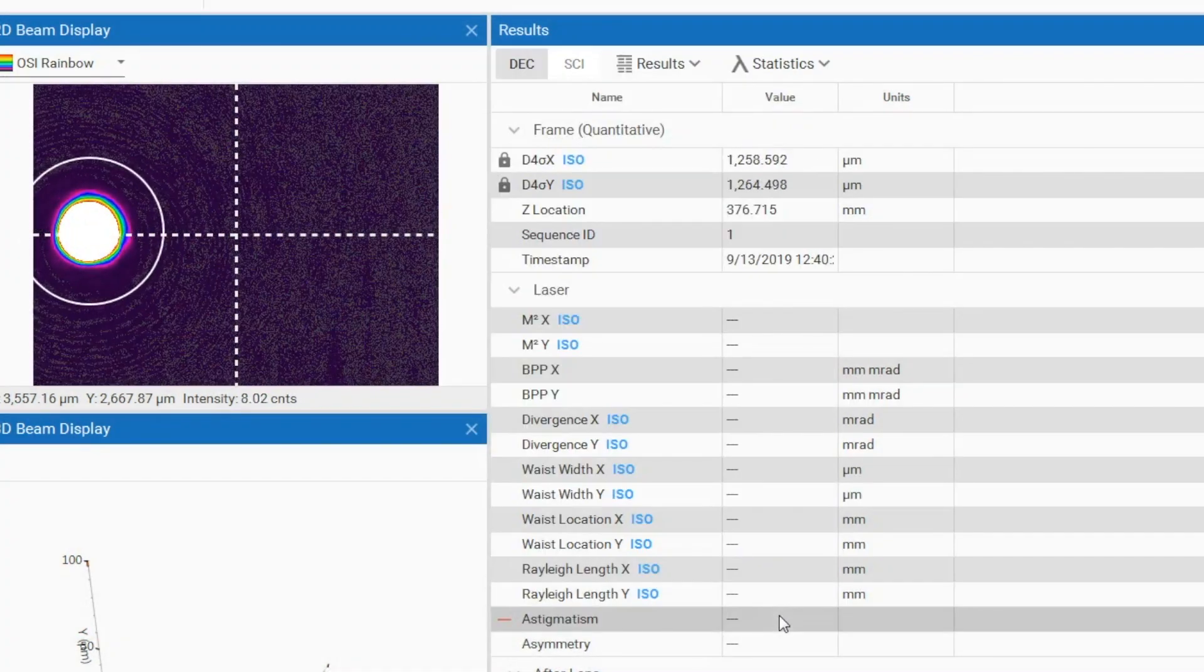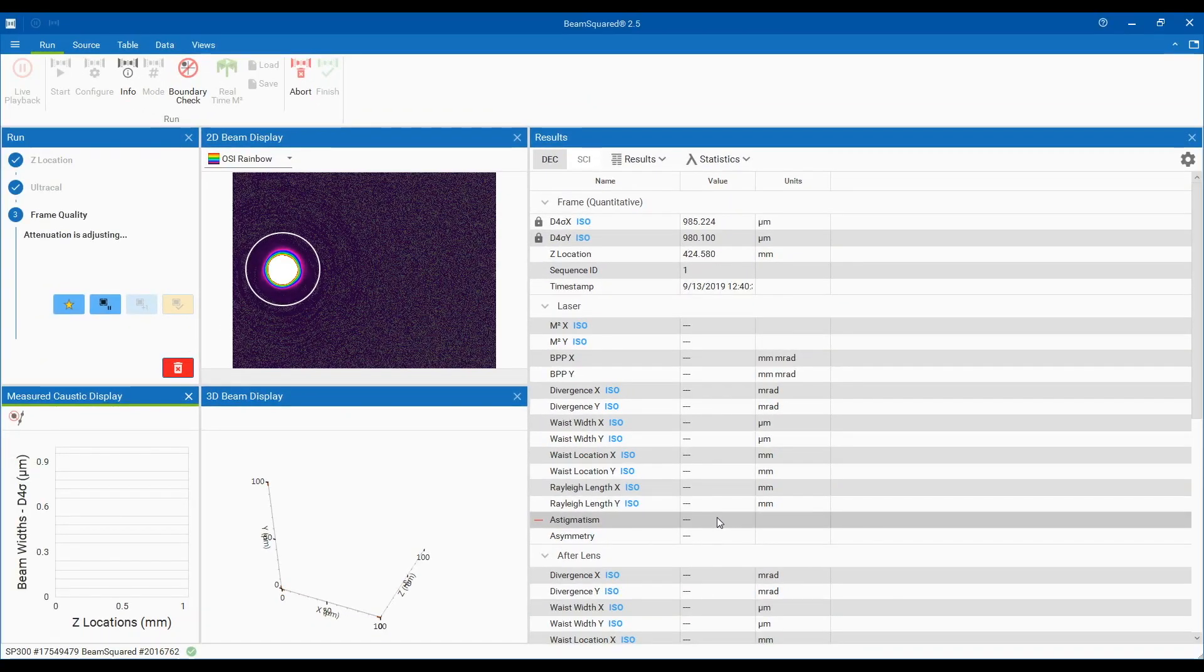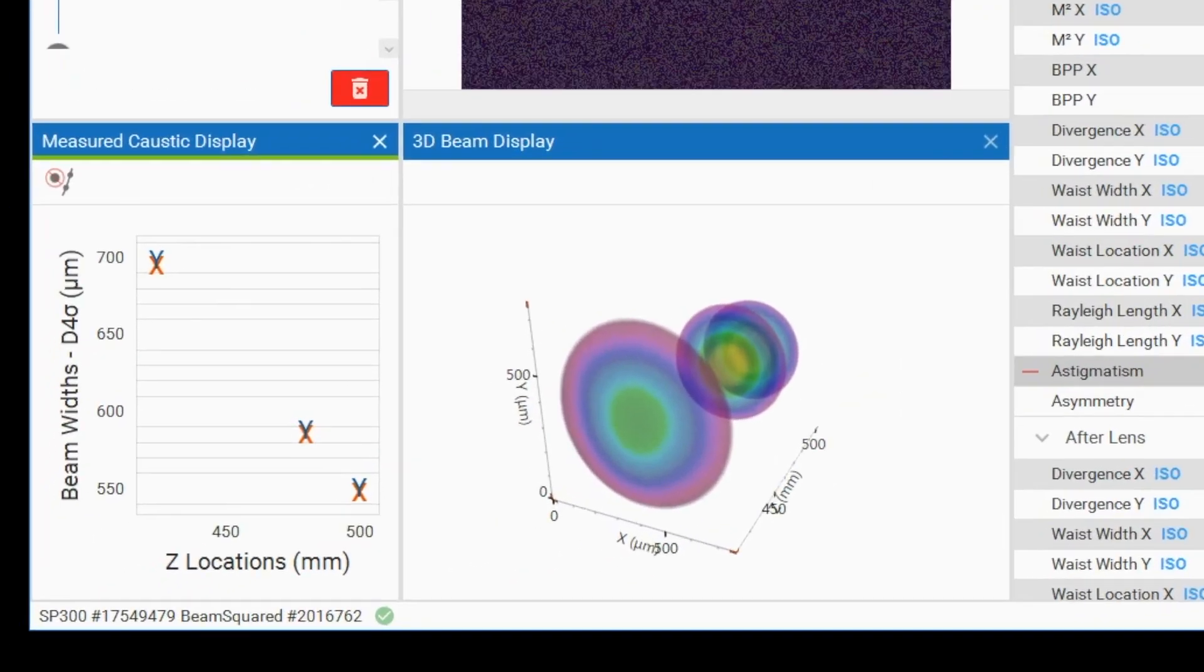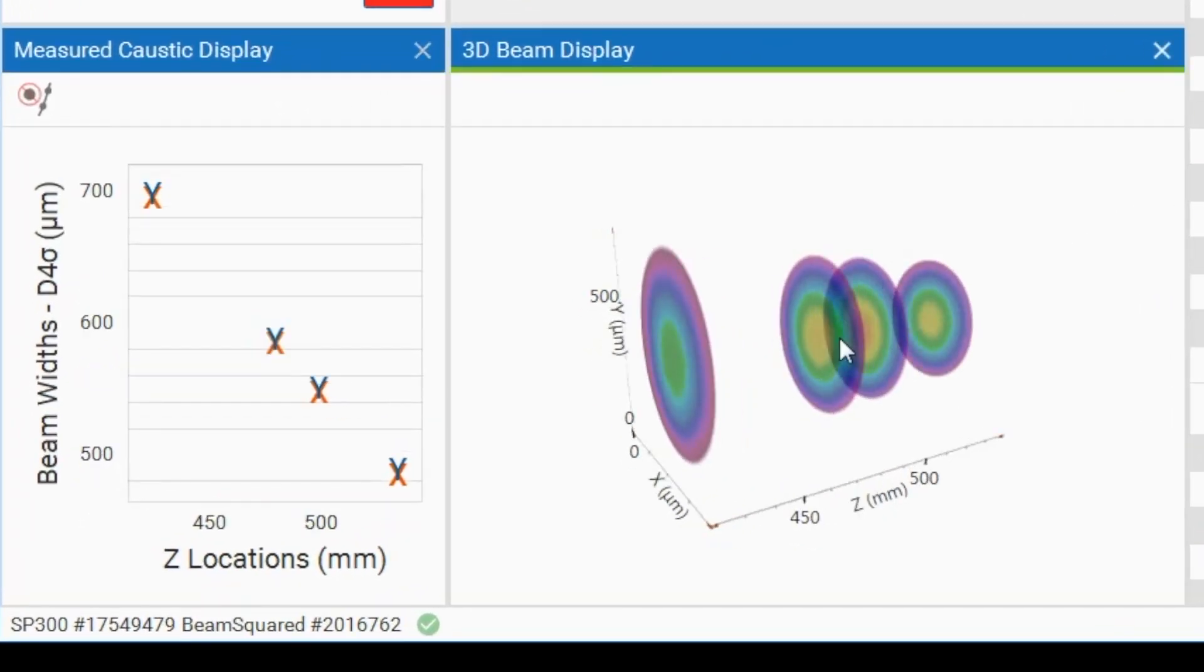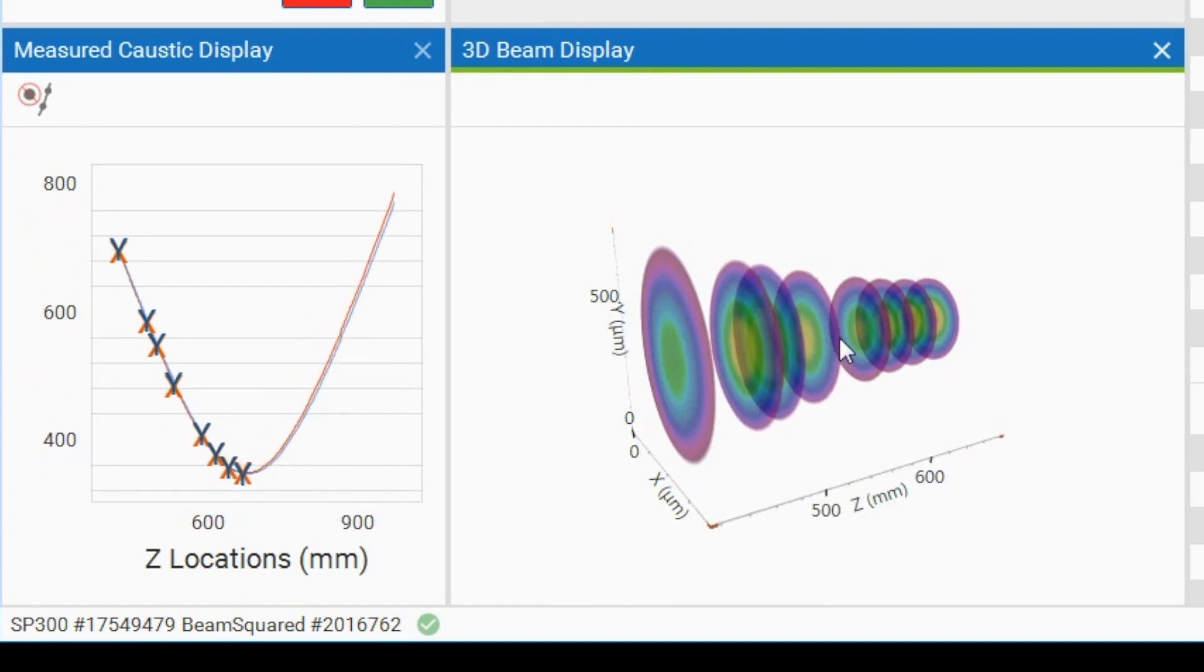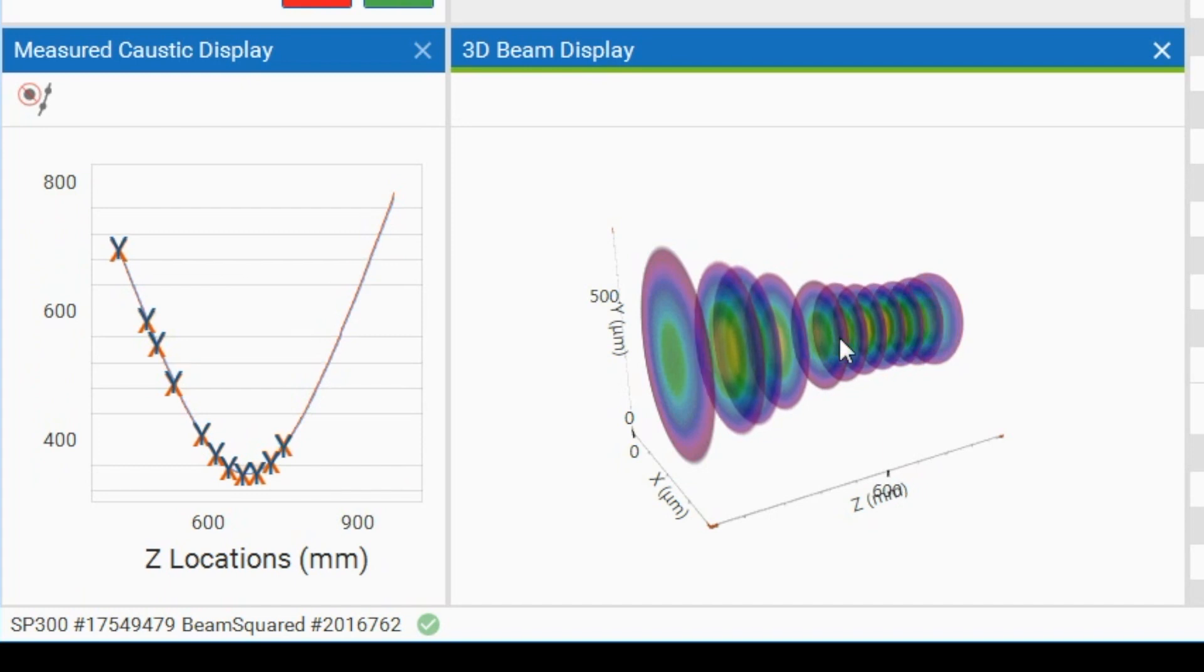The Beam Squared will then start collecting measurements at the first Z location and proceed to make additional measurements at every step. This method may also produce a measurement that satisfies the ISO standard, but the start, stop and step size parameters may need to be modified depending on the Rayleigh range of the laser under test and the lens that is selected.